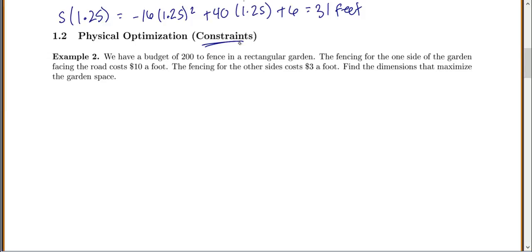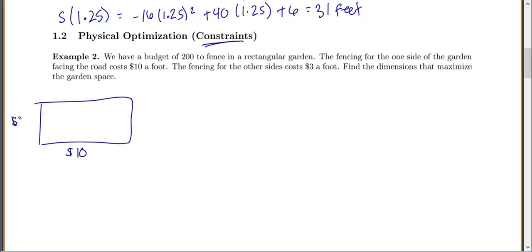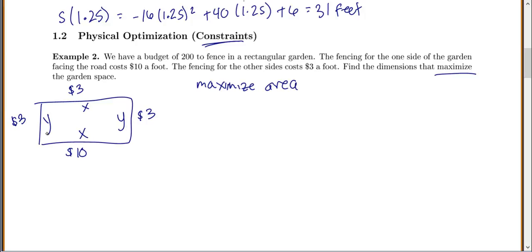We have a budget of $200 to fence in a rectangular garden. The fencing for one side of the garden facing the road costs $10 a foot, and the fencing for the other sides costs $3 a foot — it's just more expensive next to the road. We want to find the dimensions that maximize our garden space. Since it's a rectangle, we'll call the sides x, y, x, y. Our area equals x times y, and we want to maximize this.